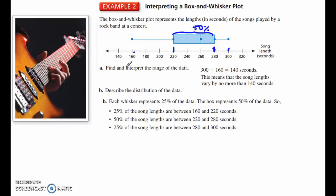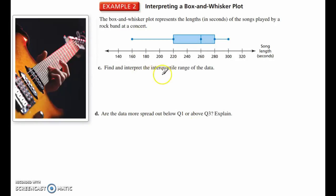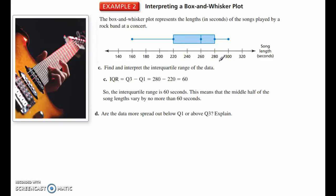All right, a couple more questions about this box and whisker plot. Find and interpret the interquartile range. Interquartile range, make sure you write this term down, highlight it. The interquartile range is the range from one quartile to the next quartile. So, the range between the quartiles is the interquartile range. We have 220 and 280. Those two subtracted from each other give us 60. The interquartile range, or IQR, is 60. What this means is that the middle half of the song lengths vary by no more than 60 seconds.